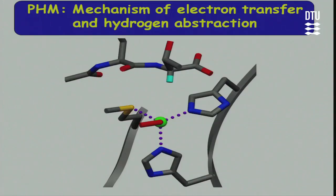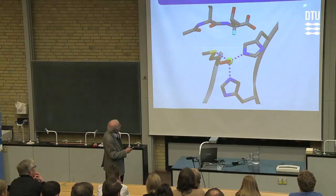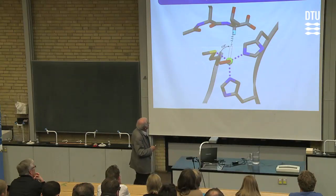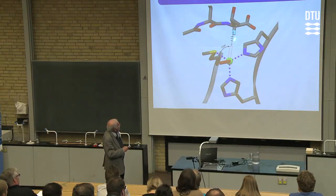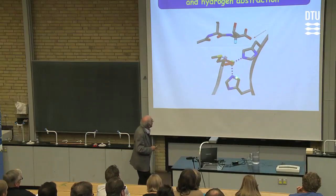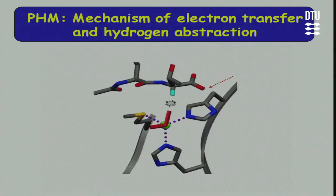Looking down at the copper-oxygen structure, the oxygen is pointing in one direction, here is where the hydrogen to be abstracted is, and here is where the electrons come in from. One possibility we considered is that during the reaction, this oxygen — which has certain mobility around that bond — will be pointing in the opposite direction, and electron transfer and proton abstraction may be part of the same process. The oxygen from time to time will do that movement, and when it does, electron transfer and hydrogen abstraction will take place simultaneously.